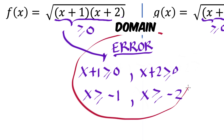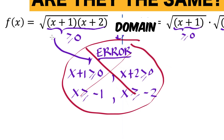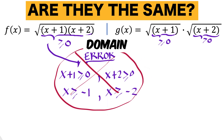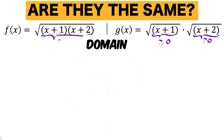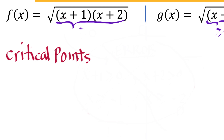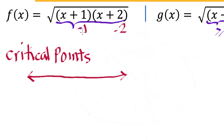So what is the right method of finding the domain of f? We are going to think of the critical points. The critical point is the value that makes (x+1) equal to 0, which is -1, and for (x+2) it's -2. Then let's draw our number line with critical points -2 and -1. Since f is defined when the radicand equals 0, the endpoints are included — shaded circles.